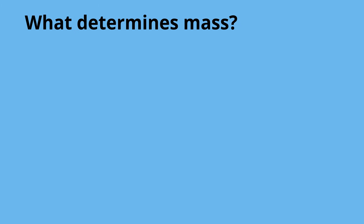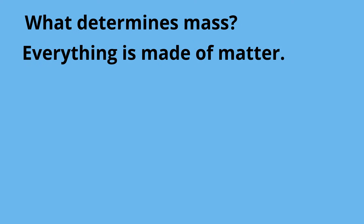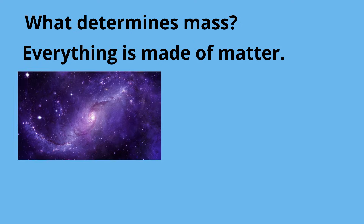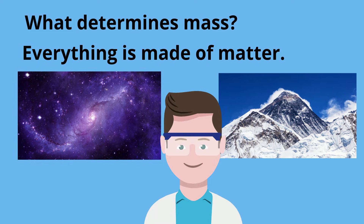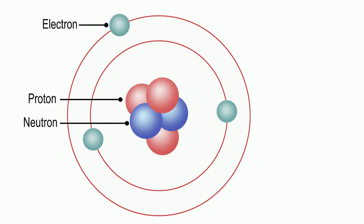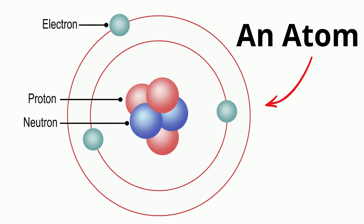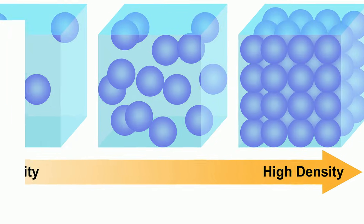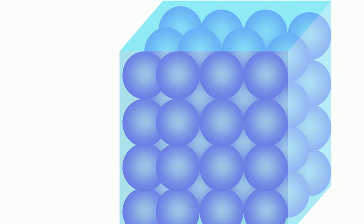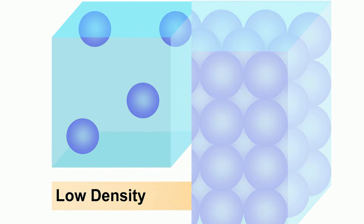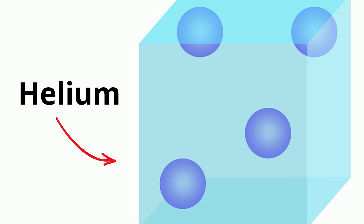But what determines the mass of an object? Everything is made up of matter — stars, Mount Everest, and you. Matter is made up of very small particles called atoms, and the atoms give objects their mass. Some objects, like gold, have atoms that are compacted very tightly, which creates a greater density. Other objects, like helium, have atoms that are less compact and further apart.